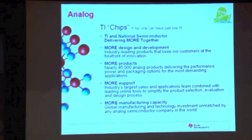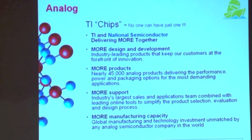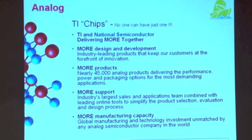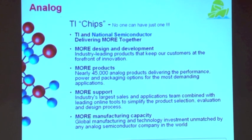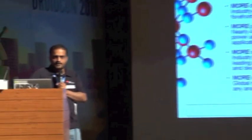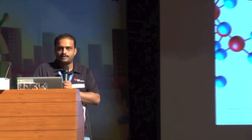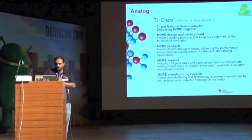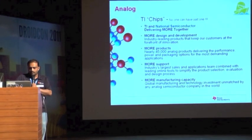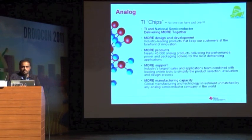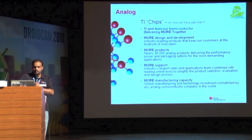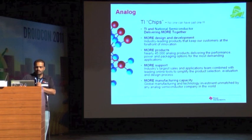TI acquired National Semiconductors this year, so we now have a huge portfolio of analog. This is adding a lot of product portfolio and solutions to TI's database. Any kind of analog you ask for will definitely be available inside TI. We have around 45,000 analog products for power, performance, and packaging options, and with TI plus National support, the support team is definitely very broad.